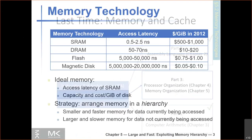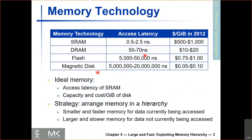We saw how there are different memory technologies. Some of them are fast but very expensive, some are slow but very cheap. We said we'd ideally like to have the latency of the fast memories but the capacity and cost of the cheap memories. To do that, we arranged our memory in a hierarchy where we put frequently accessed data in a small but fast memory component, and all our data in a larger, cheaper memory component. We call this the memory hierarchy.